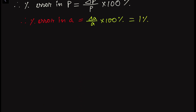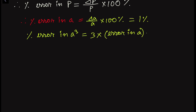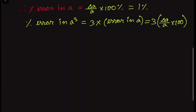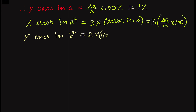Now if we want to find out the percentage error in A cubed: A cubed means A multiplied by A multiplied by A, so we will have three times the error in A. That is 3 times delta A by A into 100. Similarly, the percentage error in B squared is 2 times delta B divided by B into 100.